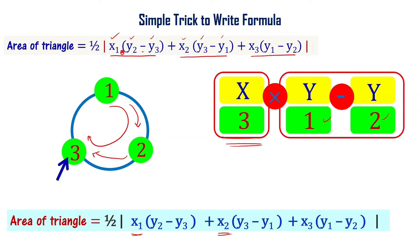How simple it is? First, label the vertices in a circle: 1, 2, 3 in clockwise direction. Then write x, y, y with a minus symbol. Follow the same process. This is a simple way to write the formula. Start with 1, go clockwise to get x₁(y₂-y₃), then continue. Follow this process and you can easily write the formula. No need to remember.